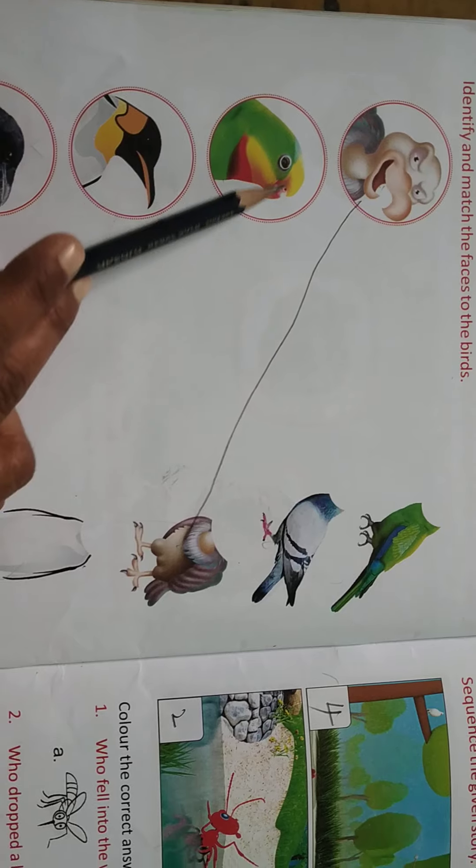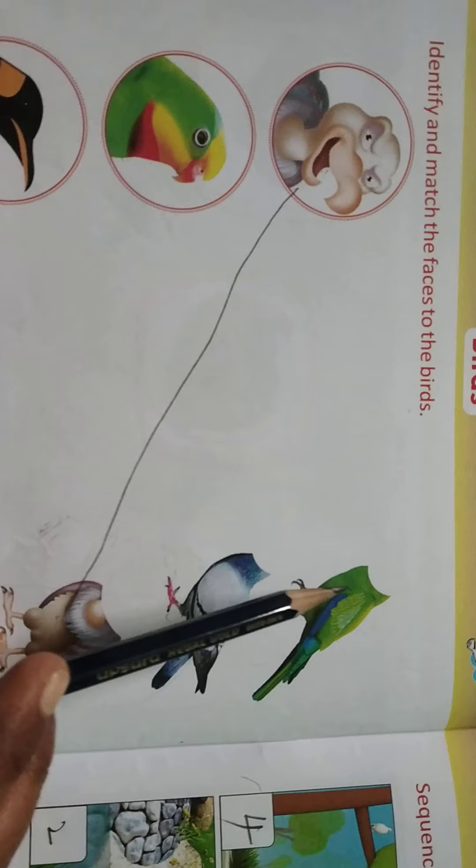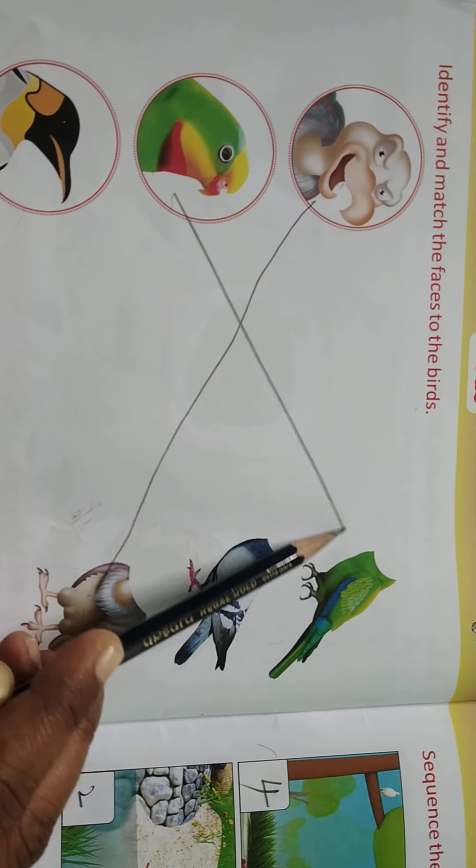Now see. This is parrot. Find the parrot. Parrot will be in green color. Find children. Yes this is parrot body. So match it.